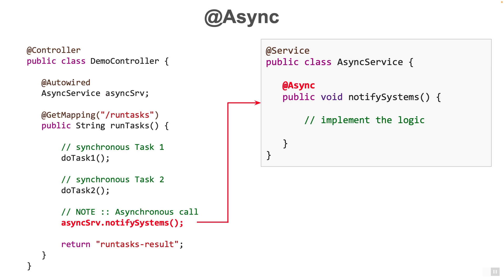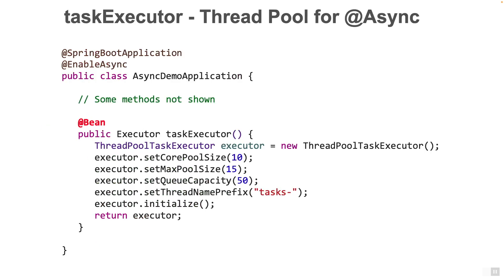But how will Spring Boot figure out which thread the async method should run on? As developers, we can specify that as configuration. We specify a threadPoolTaskExecutor, which is essentially a thread pool that will be used by Spring Boot to execute all methods marked with the @Async annotation. If we do not specify this, Spring Boot will default to an executor which may not be what you want.